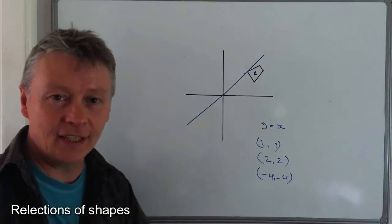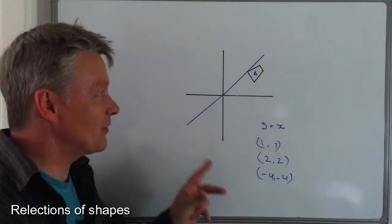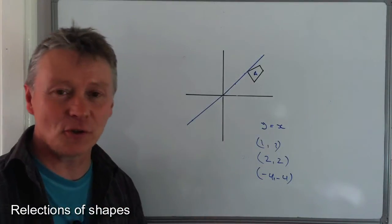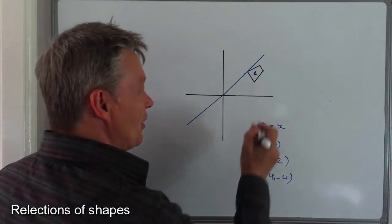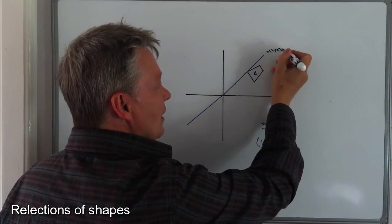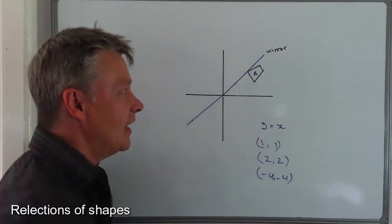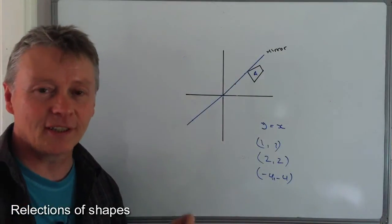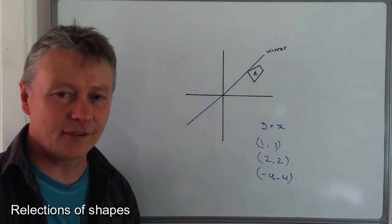Now again, in the previous videos, I've talked about that the reflection is always perpendicular to the mirror line. So there's my mirror line, and if I want it perpendicular, I have to make sure that it's 90 degrees.